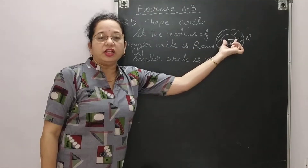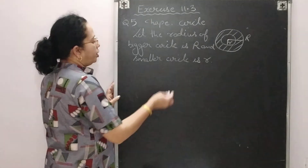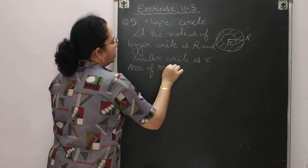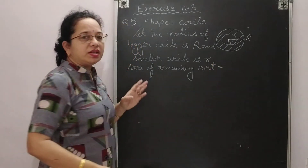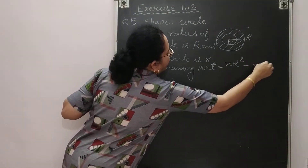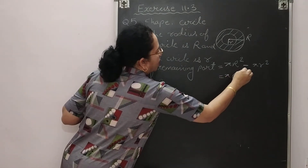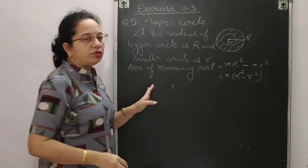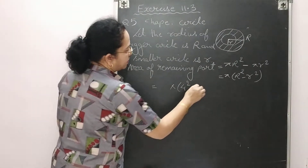Since we are cutting a portion, the word 'cut' and 'remaining' both indicate subtraction. Area of remaining part = area of bigger circle − area of smaller circle = πR² − πr². Taking pi common: π(R² − r²). Substituting: R = 4, r = 3, so 4² − 3² = 16 − 9 = 7.